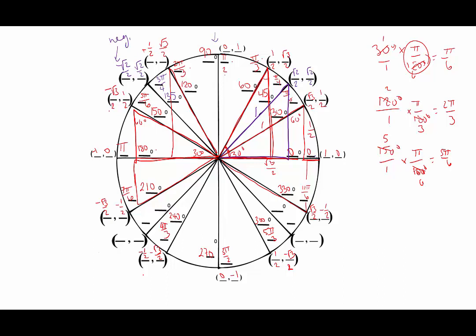The next 45-degree step would hit 180, which we've done, so the next new one is 225 degrees, equivalent to 5pi/4. In quadrant 3 everything is negative: (−√2/2, −√2/2). The next 45 degrees hits 270, already done, and after that is 315 degrees, equivalent to 7pi/4. In quadrant 4, x is positive and y is negative: (√2/2, −√2/2).